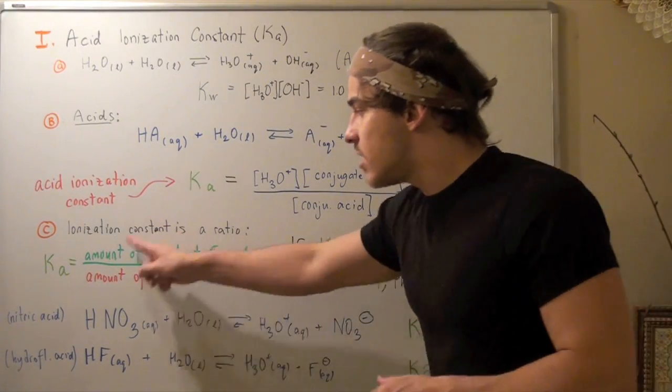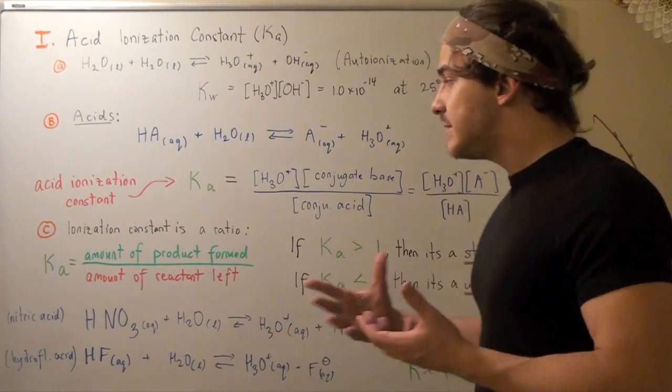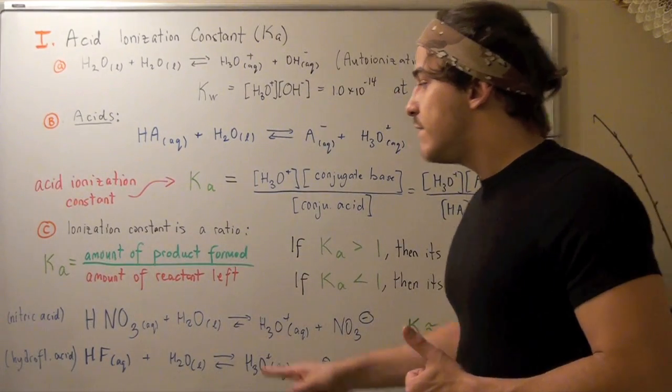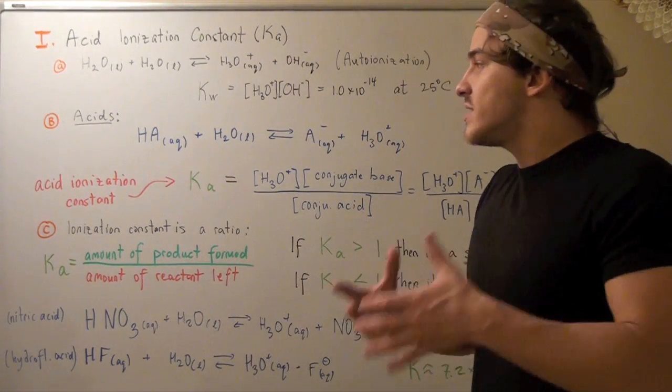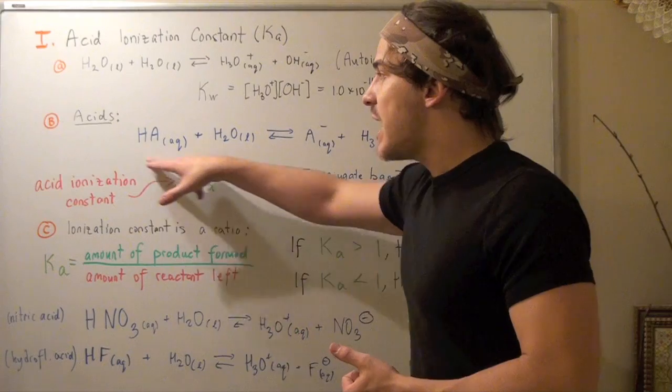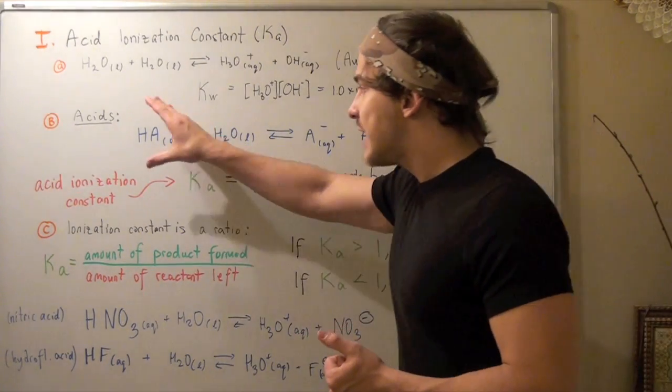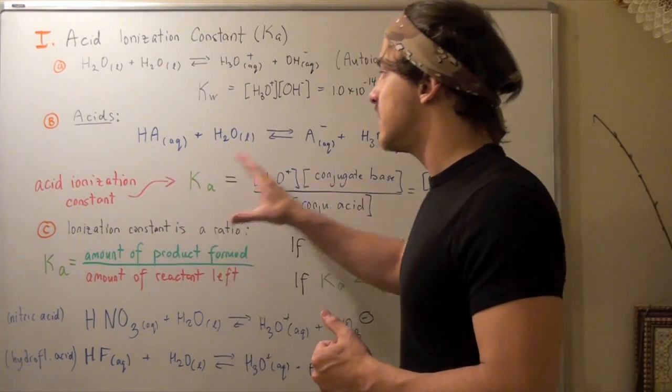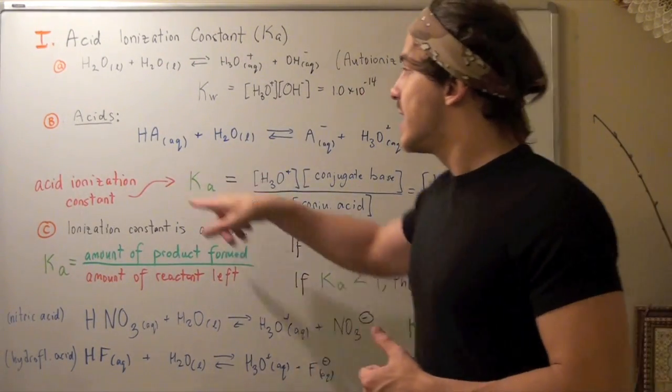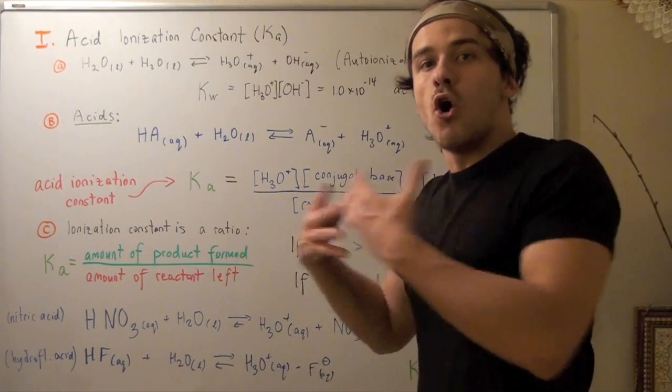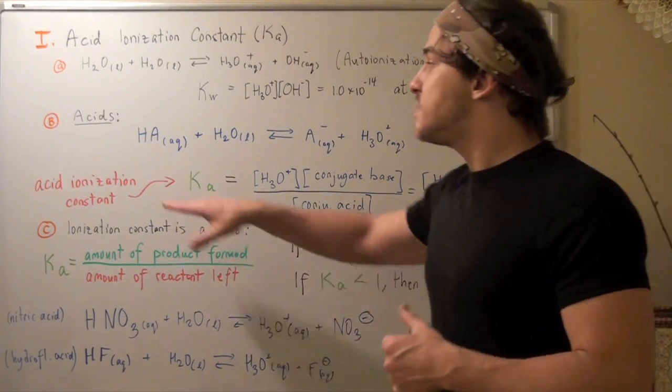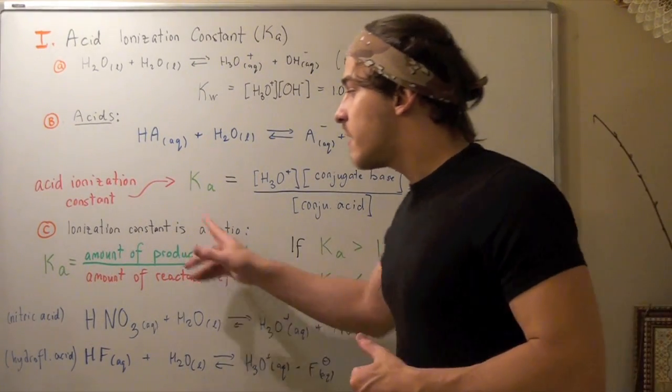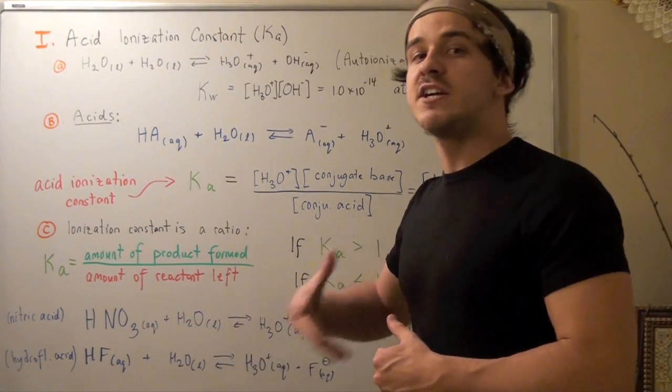If this number is very large, then a lot of product was formed and very little reactant is left over. If the reaction is favored in the forward direction, that means this acid is very good at giving off that H. So it must be a very good acid by definition. Therefore, if our Ka is large, we have a good acid.